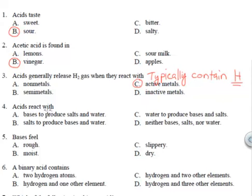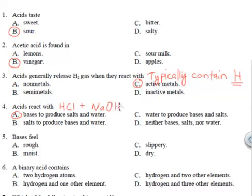Acids react with bases to produce salts and water. The very typical reaction we've seen many times is hydrochloric acid combining with sodium hydroxide (NaOH) to form NaCl — that's your salt, regular old table salt — and water, H2O.